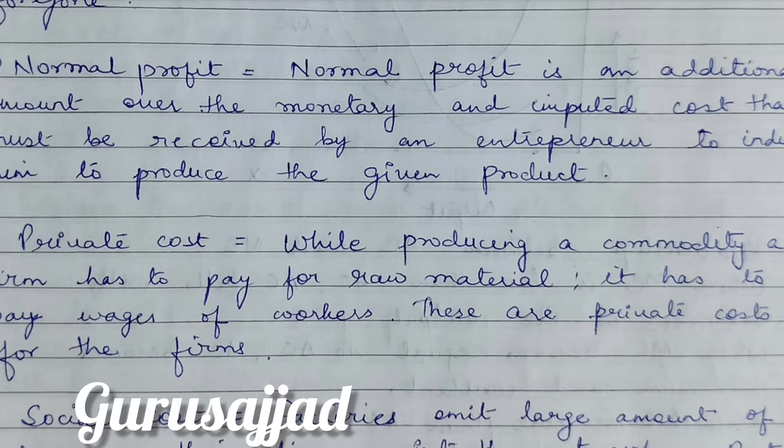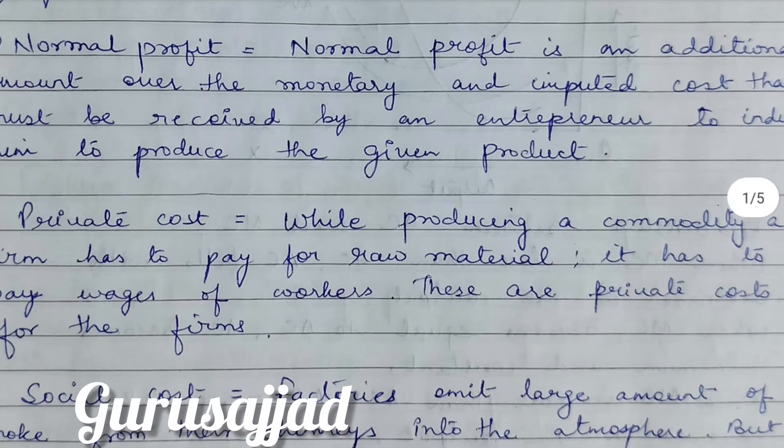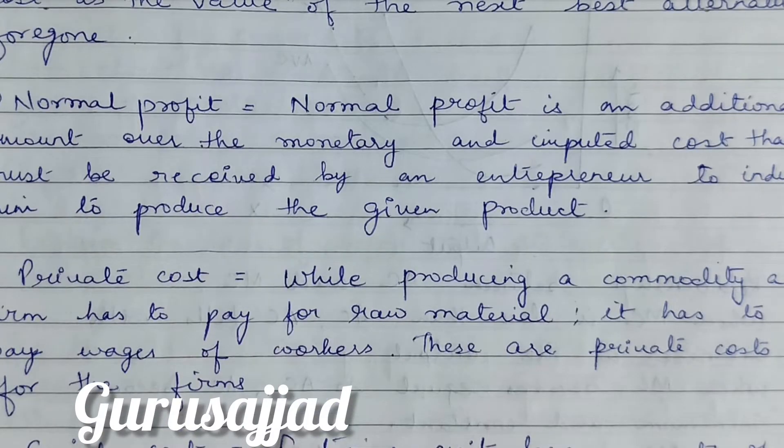Next definition is normal profit. Students often answer that normal profit is simply the profit which is normally gained, but this is not true. Normal profit is an additional amount over the monetary and imputed cost that must be received by an entrepreneur to induce him to produce the given product. For example, if our cost price is Rs. 50,000 and we sell at Rs. 55,000, the gain of Rs. 5,000 is our normal profit.